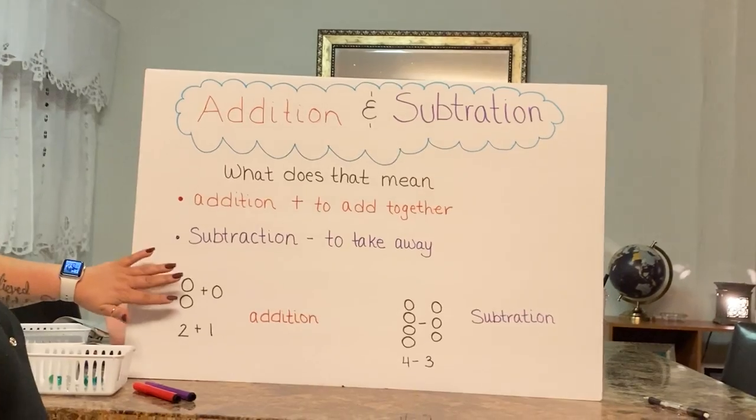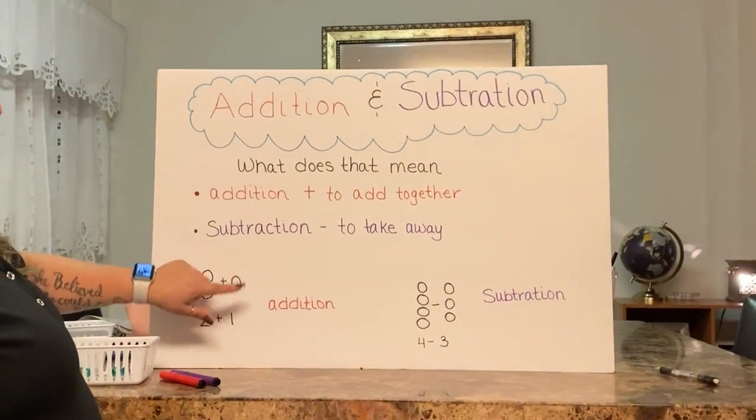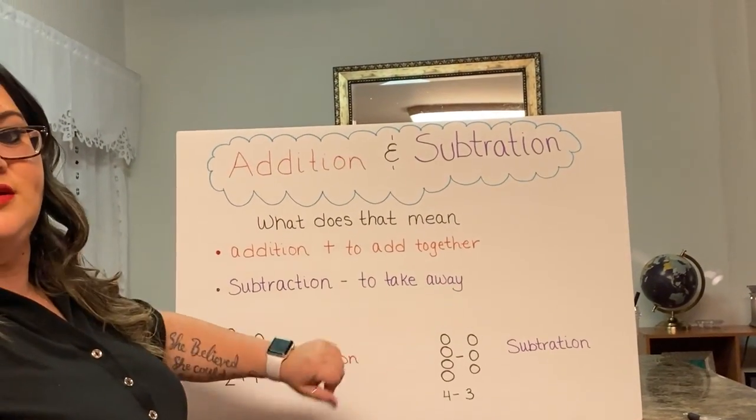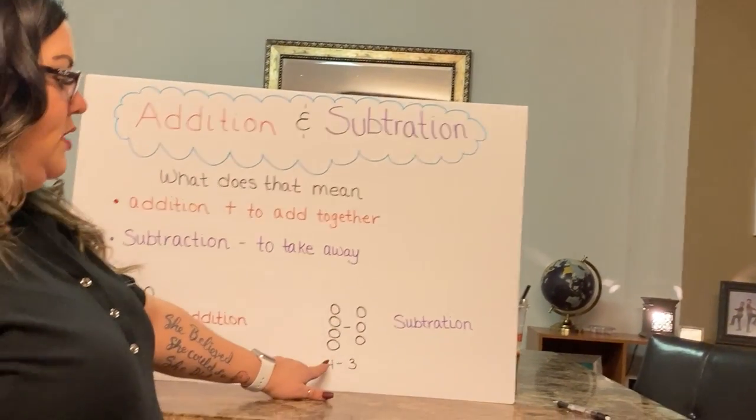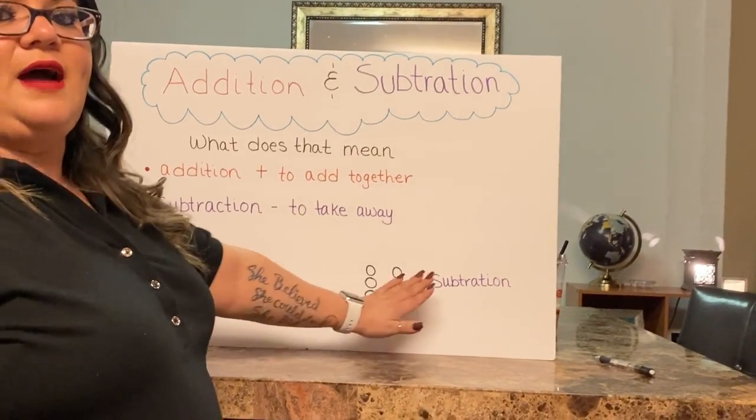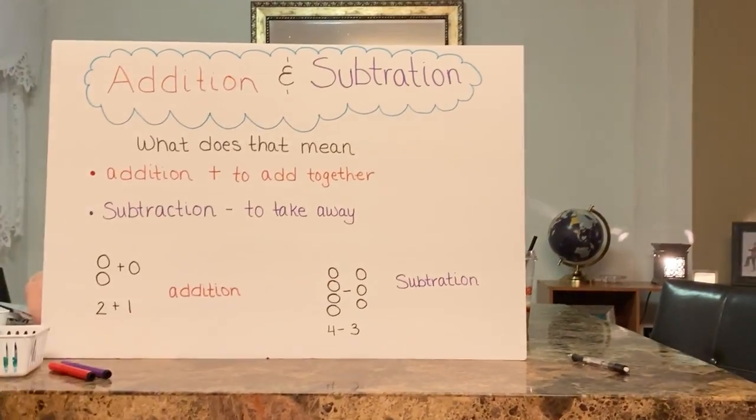Here we have two marbles, two plus one marble, that would be an addition problem. Here we have four marbles, minus three marbles. Four minus three. That would be a subtraction problem.